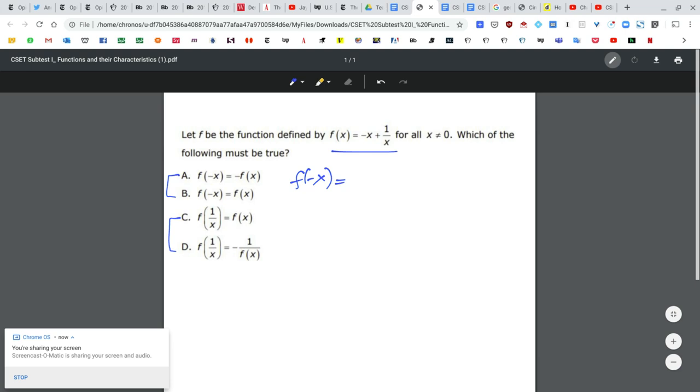So f of negative x simply means replace every x with negative x. I'll use parentheses so I don't make mistakes. 1 over negative x. That becomes positive x minus 1 over x. That's f of negative x.